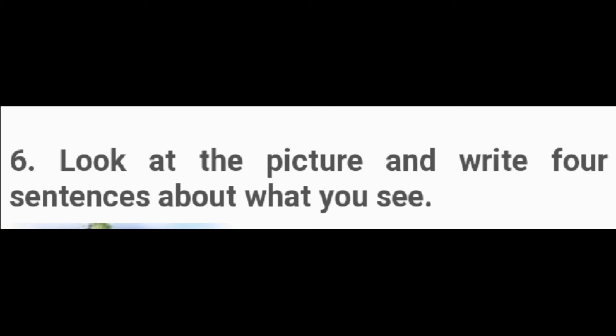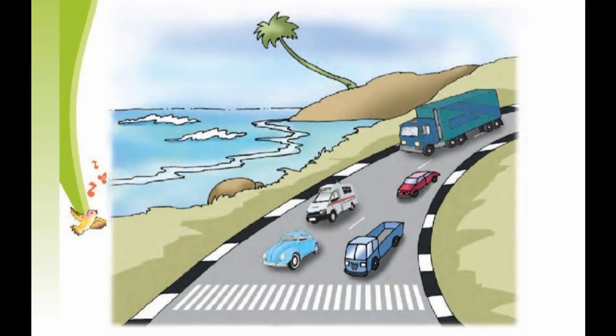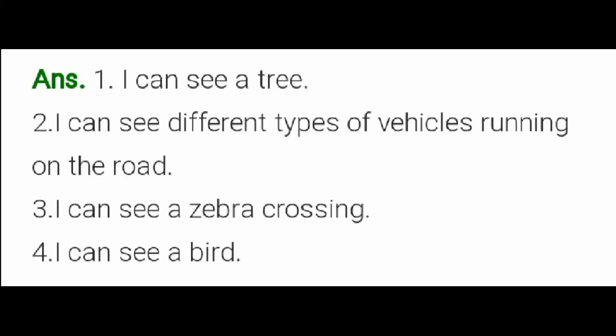Now look at the picture and write four sentences about what you see. You can write your own sentences based on what you see in the picture. For example: I can see a tree. I can see different types of vehicles running on the road. I can see a zebra crossing. I can see a bird.